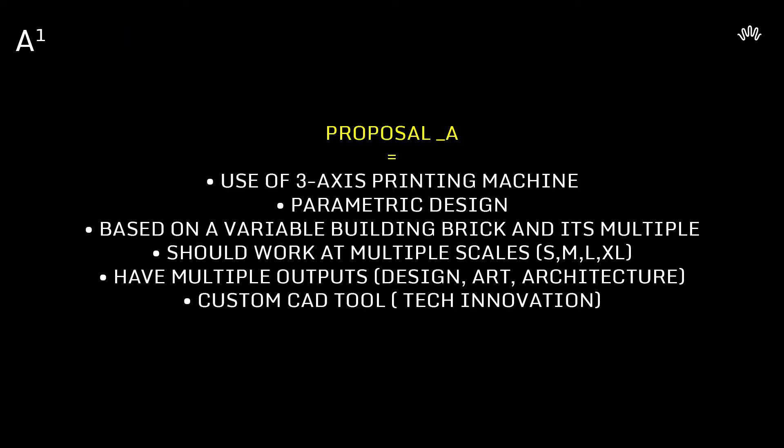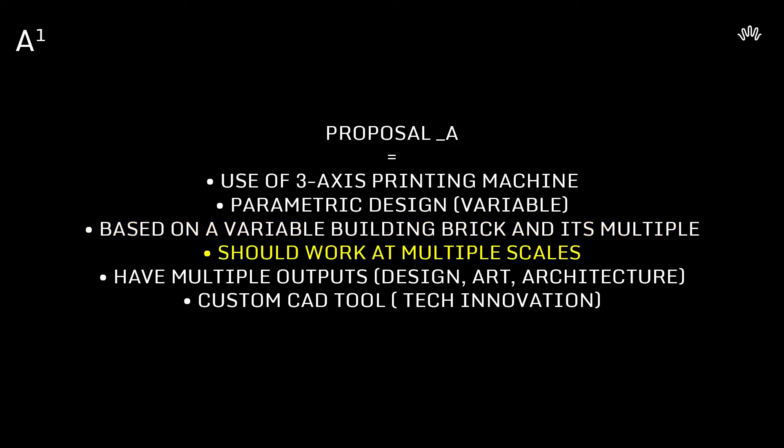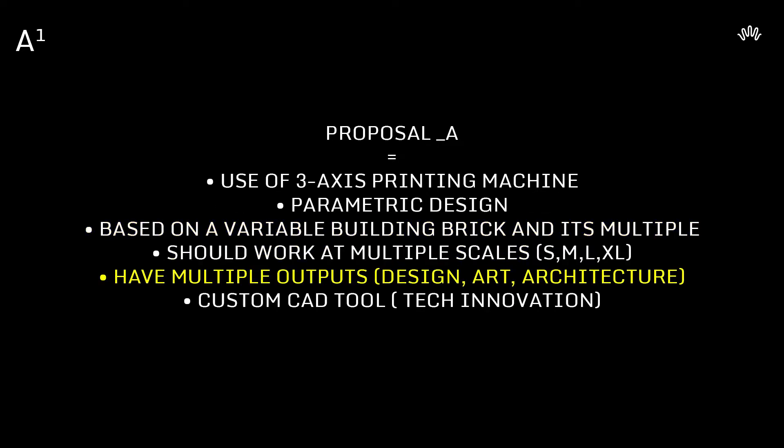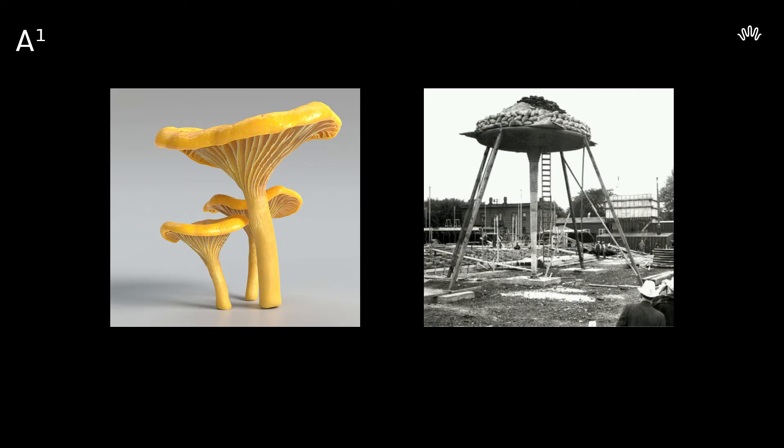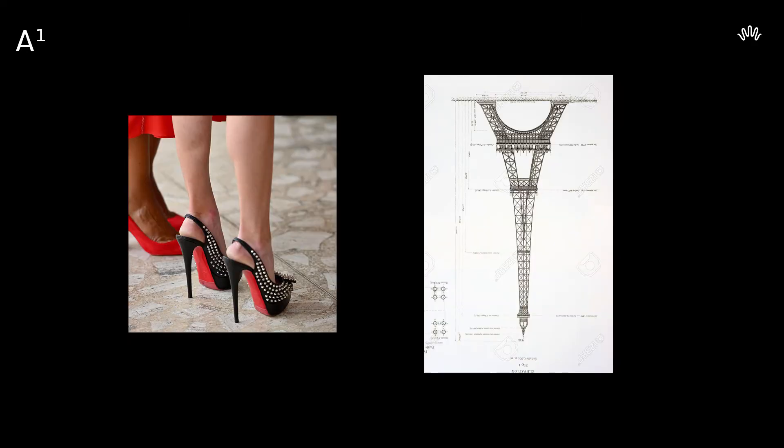For proposal A, we'd like to use the three-axis machine, work with a parametric design based on a variable building brain and its multiple use. It should also work at multiple scales, have different outputs from design to architecture, and we also develop a custom CAD tool. Inspiration comes from nature, architecture, pop culture, and engineering.